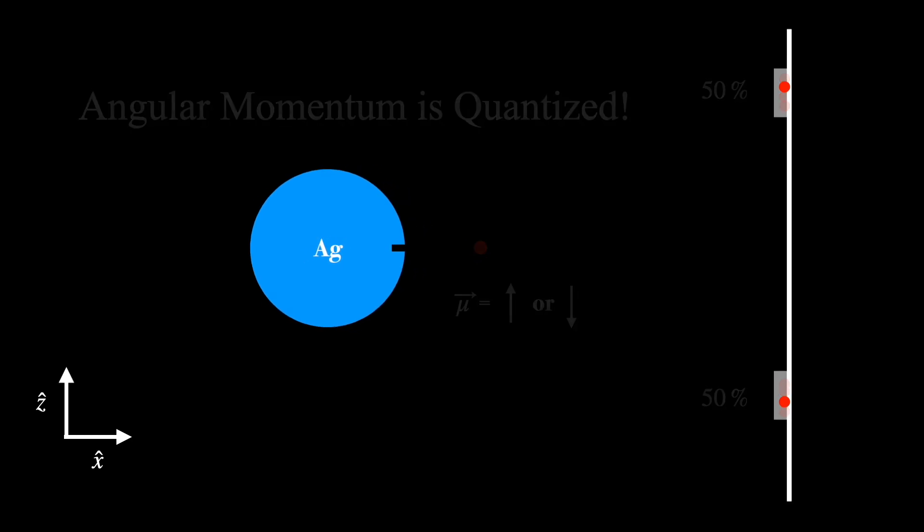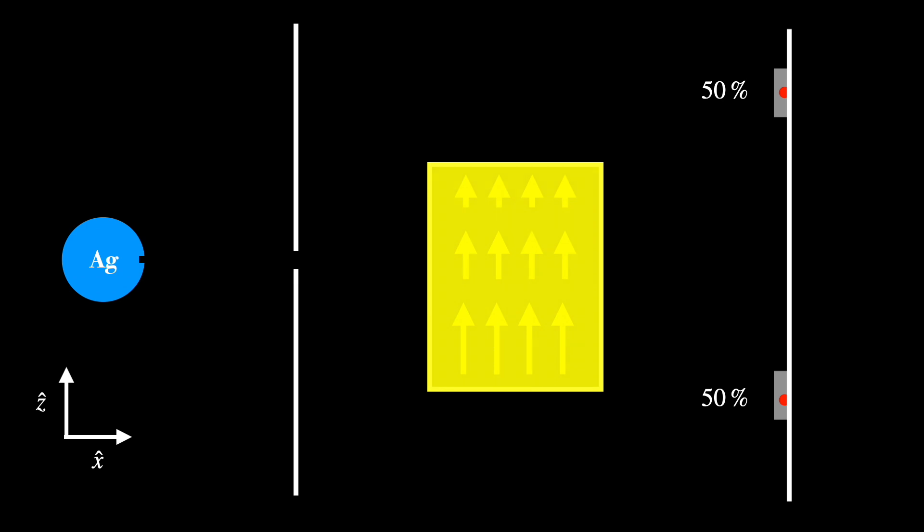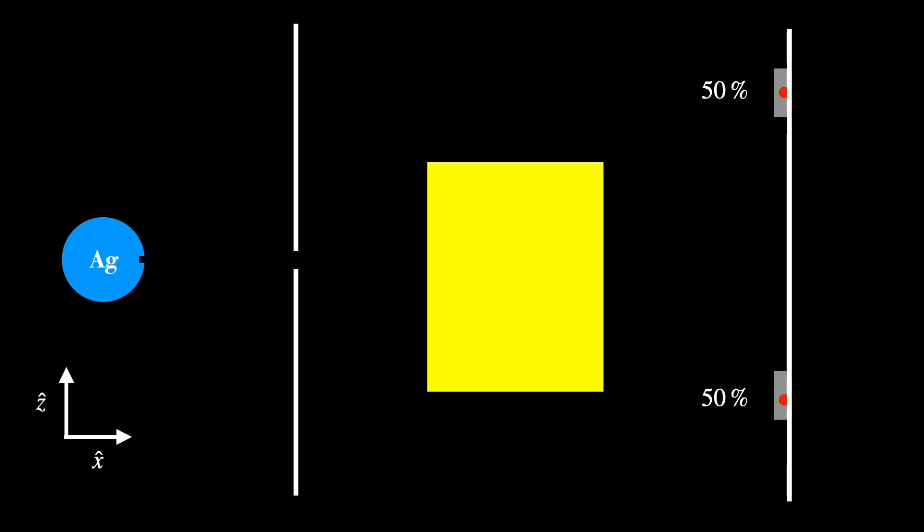Now this result is interesting in its own right. However, things become much more interesting if this experiment is performed sequentially. And what I mean by that will be clarified by the following schematic diagram. First, let's isolate this inhomogeneous magnetic field that was set up in the z direction. And we'll call it a Stern-Gerlach apparatus in the z direction.